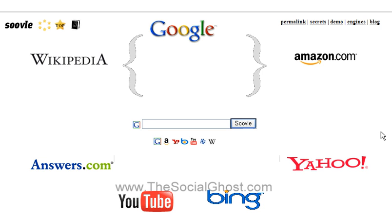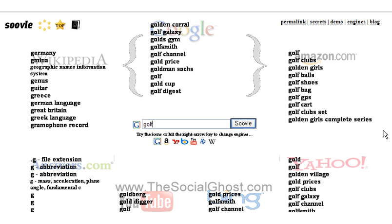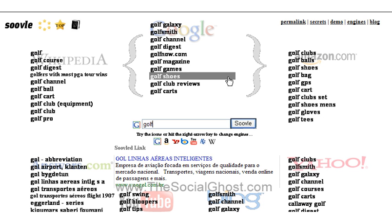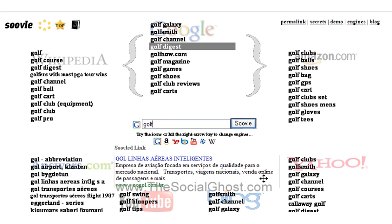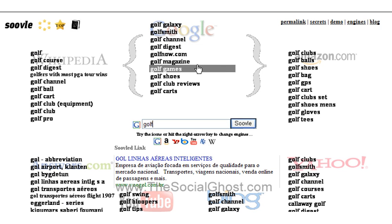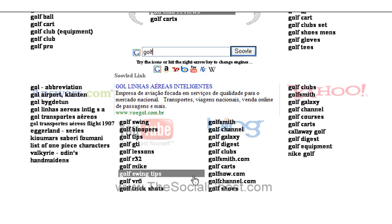Let's start with a common term — we're going to start with golf. As I type in golf, you can see things start popping up. Just by typing in golf, every single one of these different services — Google, Amazon, Yahoo, Bing, YouTube, Answers.com, and Wikipedia — will start showing different search results. You can see there's a wide variety of things, and what people are searching for on Google isn't necessarily what they're searching for on YouTube.